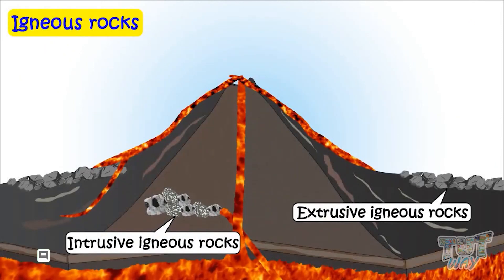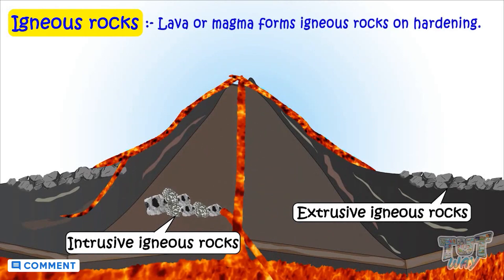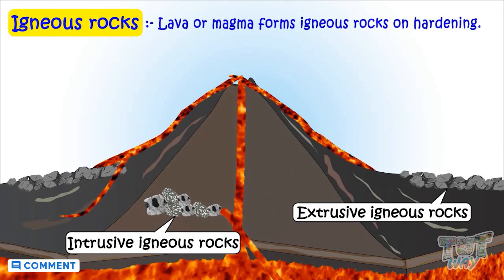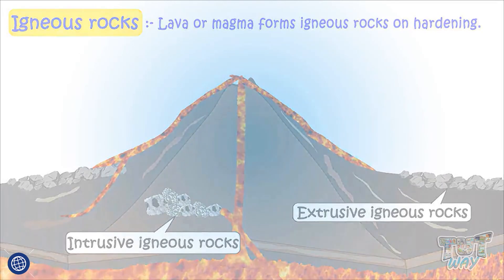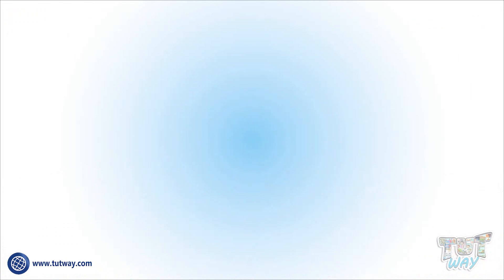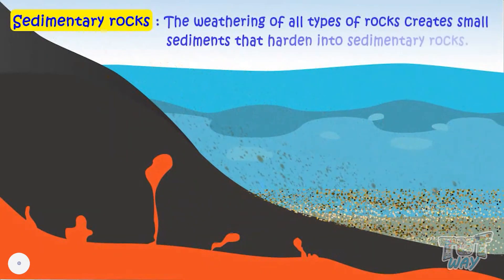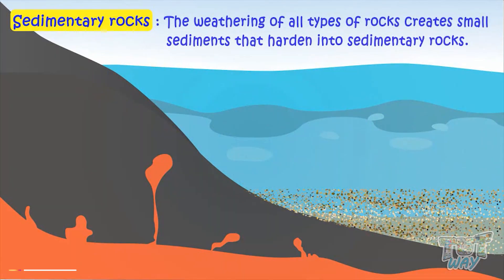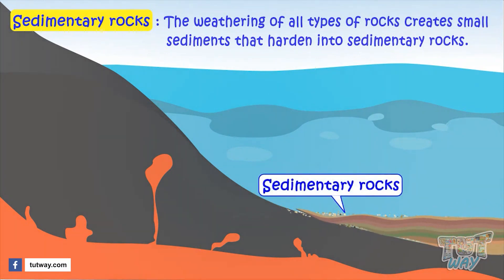Igneous rocks — lava or magma forms igneous rocks on hardening. Sedimentary rocks — the weathering of all types of rocks creates small sediments that harden into sedimentary rocks.